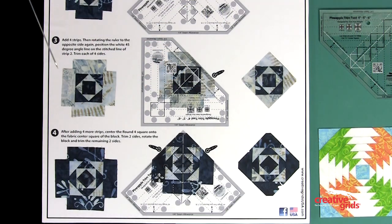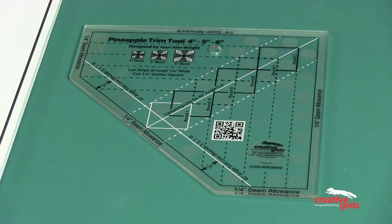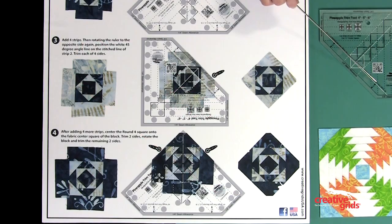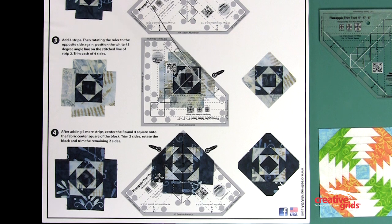For round three, add strips and press. Once again, rotate the ruler and locate the long white line. Position this 45 degree line on the seam line of the previous round and trim. Rotate the block to finish trimming all four sides.